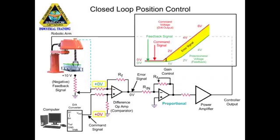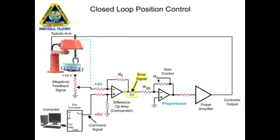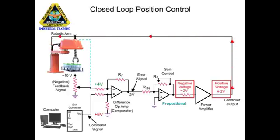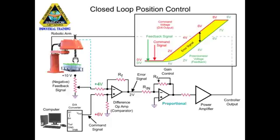In this system, there is not an immediate response by the robotic arm to the command signal. The delay of the arm and feedback signal creates a positive error signal voltage at the output of the difference op-amp. The error signal is inverted by the proportional difference op-amp to a negative voltage, then amplified by the power amp and inverted to a positive voltage and applied to the motor of the robotic arm.